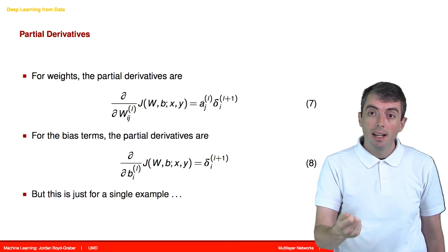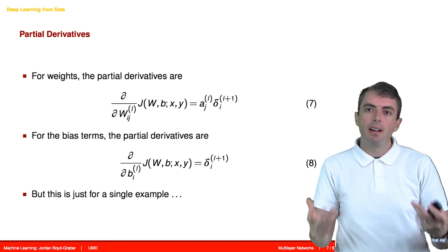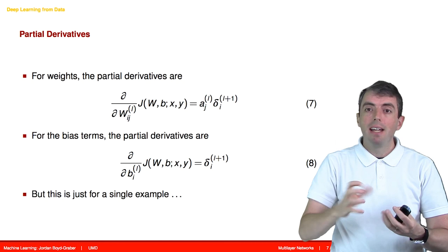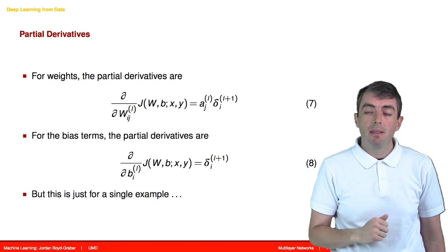The biases get updated just by the error. Recall that the biases are independent of the inputs. If all of the parameters were zero, the bias would make the entirety of the decision. So we don't actually need the activation of a node to update the biases. We just need the error that the node made.